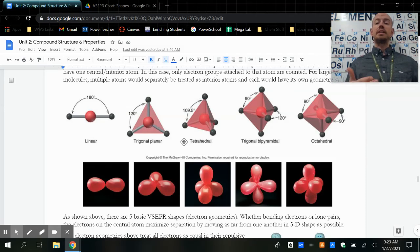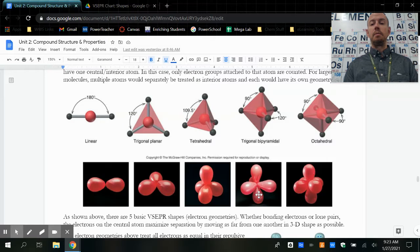Once we go to expanded octets, either with extra atoms or extra lone pairs, then we need to put those extra electrons as far away as possible. When we have a fifth or sixth, we go to shapes that we call trigonal bipyramidal, like two pyramids put together, or octahedral, because this shape would be a shape with eight faces.